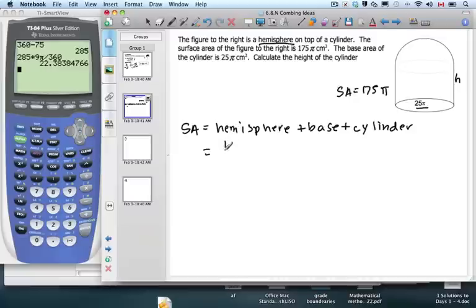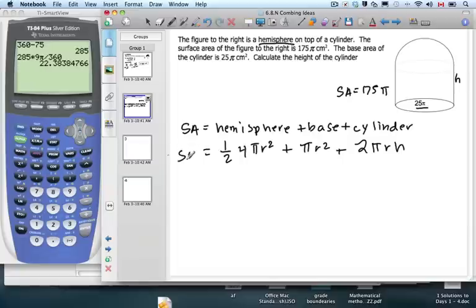Hemisphere, we know that its surface area is half of 4 pi r squared. We all have that memorized from the oranges. The base, well that's this right here, we can say pi r squared if we just keep with the formulas. And remember, with the cylinder we're only taking the curvy part. We know from a regular cylinder the area of the curvy part is 2 pi r h. And we know this whole surface area is 175 pi.